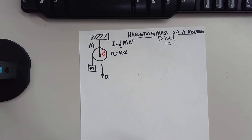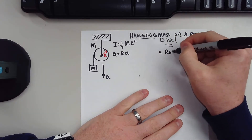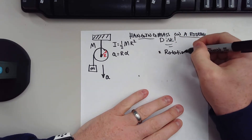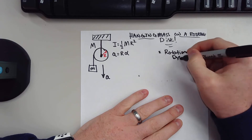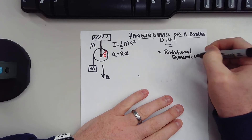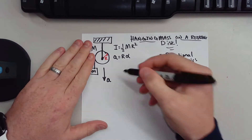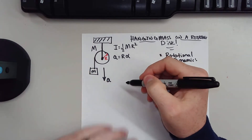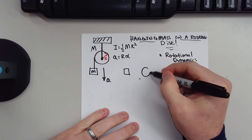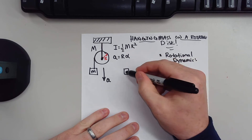We call this rotational dynamics. The first thing we're going to need to do is draw free body diagrams for these — that's going to help us out later. So I have my disk and my hanging mass.